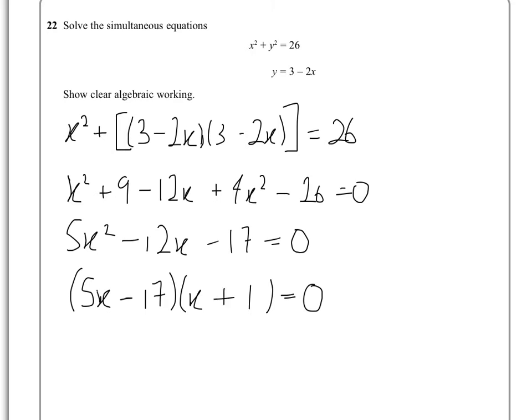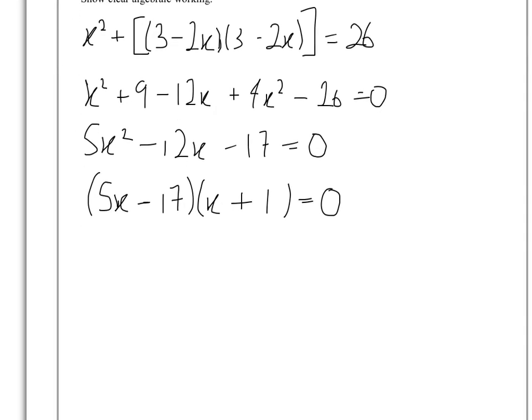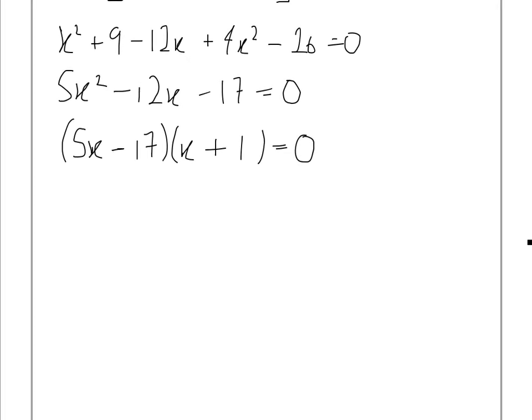So what we therefore know is that 5x minus 17 equals 0, therefore x equals 17 over 5 which is 3.4.